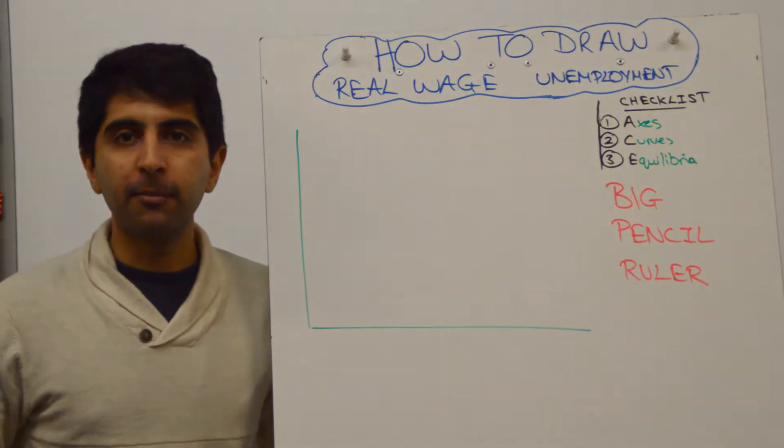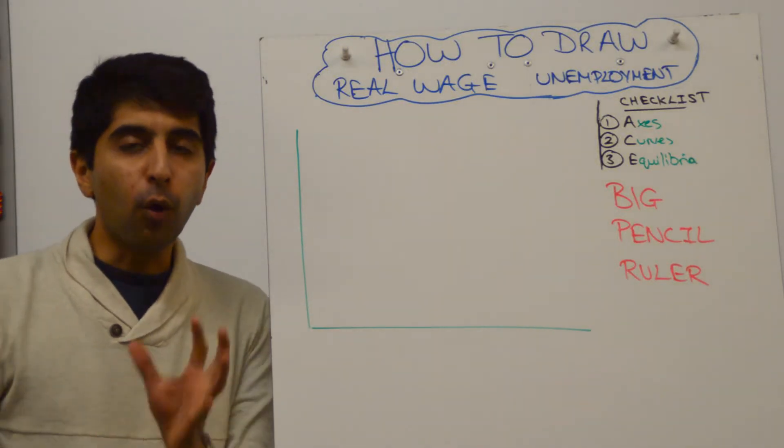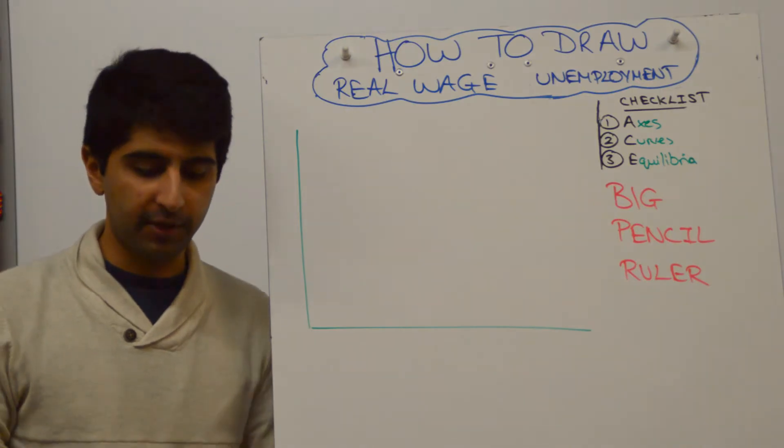Hello everybody, you need to draw a diagram of real wage unemployment, also known as classical unemployment. How do you do it?